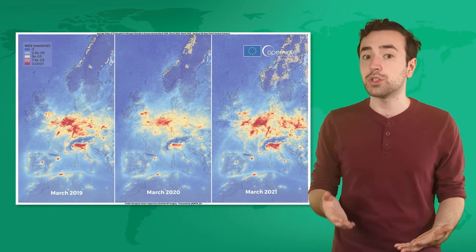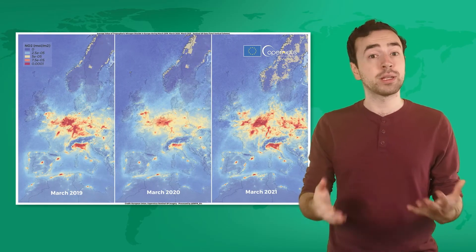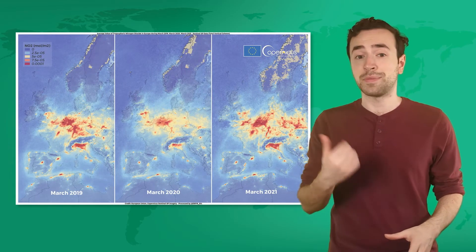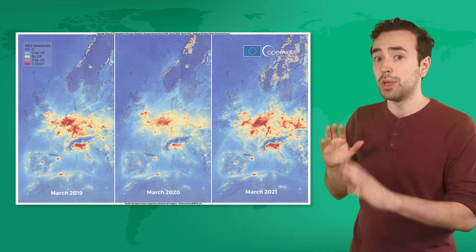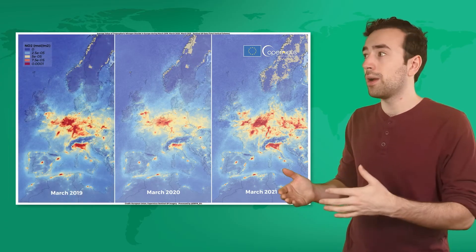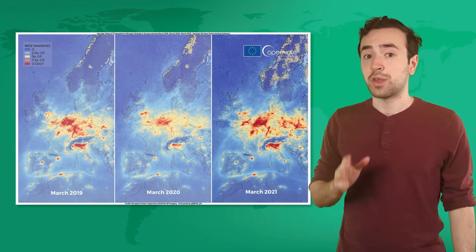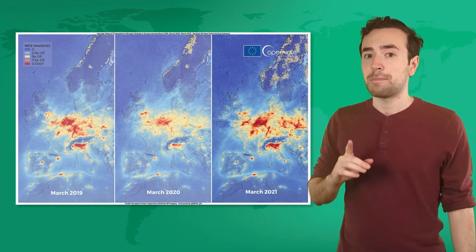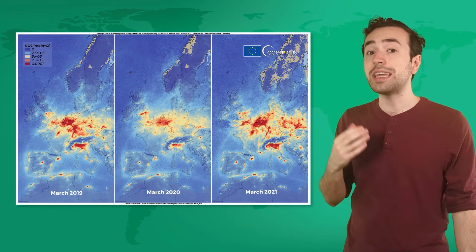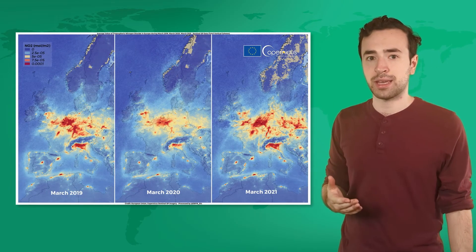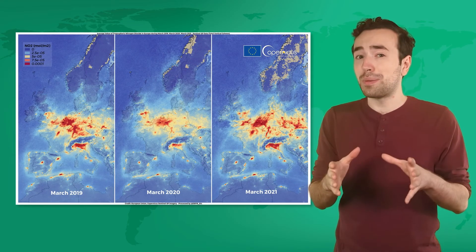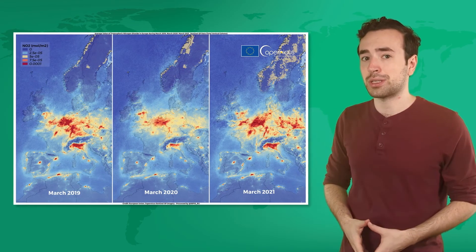Remote sensing was used to track environmental changes resulting from COVID travel restrictions. This map shows the changes in air pollution in Europe before, during, and after the pandemic. This data helped geographers see the broader impact of the pandemic, and it also helped them identify areas that were complying with lockdowns and travel restrictions.